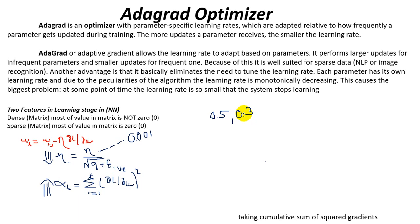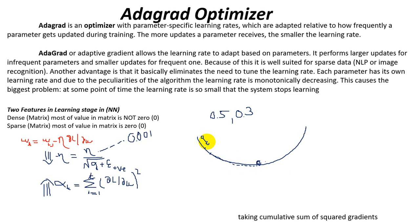In machine learning, natural language processing, and image recognition, when we convert an image into a matrix, we have a basic concept called dense or sparse layers in the neural network. In a sparse matrix, most of the values in the matrix are zero, whereas in a dense matrix, most of the values are not zero. I will explain this so you can understand the visualization and how the data is represented.